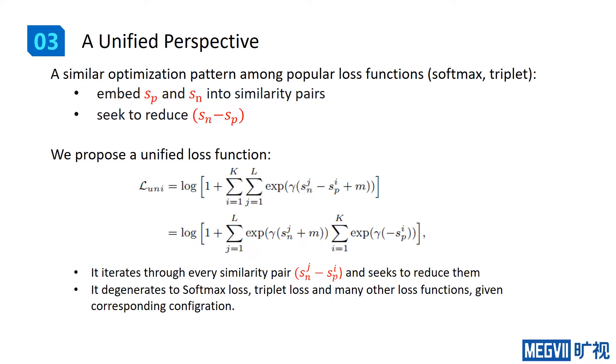Among these popular loss functions, we observe a similar optimization pattern. We find that they all embed s_p and s_n into similarity pairs and seek to reduce s_n minus s_p. With this insight, we first propose a unified loss function.